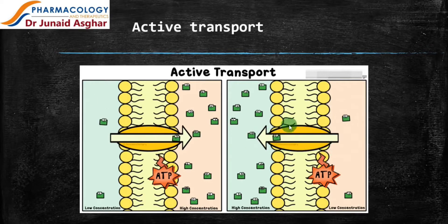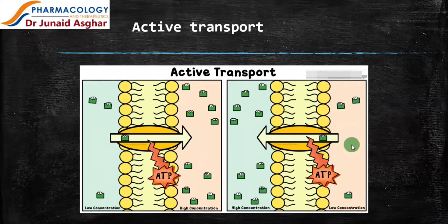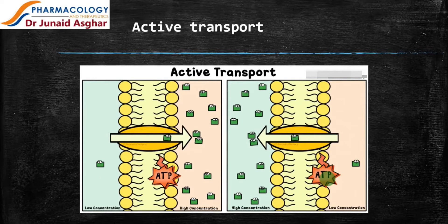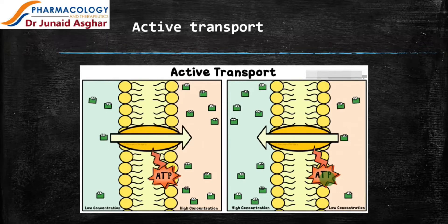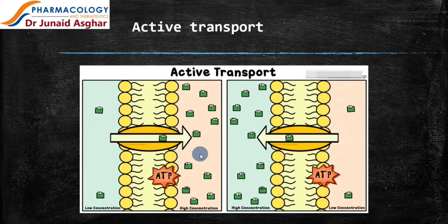In facilitated diffusion there is a carrier, and in active transport there is also a carrier — that is the similarity. The dissimilarity is that in active transport there is movement from lower to higher concentration, whereas in facilitated diffusion there is movement from higher to lower concentration. There is ATP in active transport, but no ATP in facilitated diffusion because it is not required. ATP is only required to drive from lower to higher concentration — like driving a car uphill. When going downhill from higher to lower concentration, no ATP is required. On this side, the same process takes place: movement from lower to higher concentration, driven by ATP, in the presence of a carrier protein in the cell membrane.